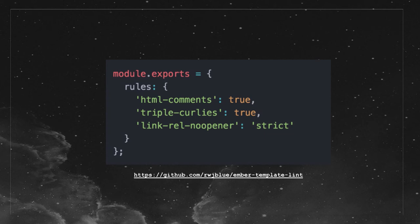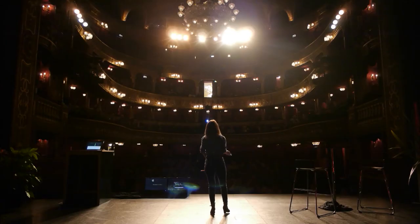Big frameworks like Ember that rely heavily on templates have a really good solution for this. There's a plugin called Ember Template Lint that I've contributed to a couple of times. It gives you rules for detection of triple curlies, noopener and noreferrer, comments, and a bunch of other things. If you're using a different framework but use templates and want to write your own linter, I highly recommend looking at Ember Template Lint as inspiration - it's a Node plugin adapted for Ember, so it can be used as inspiration for anything.